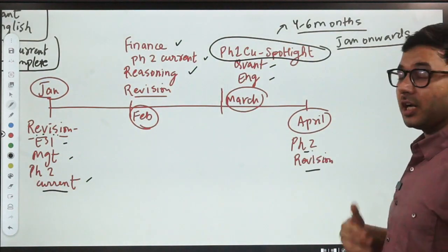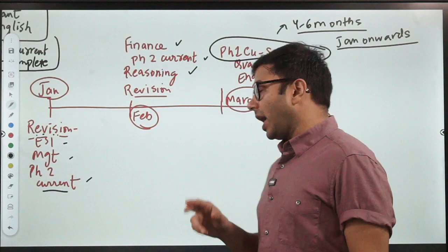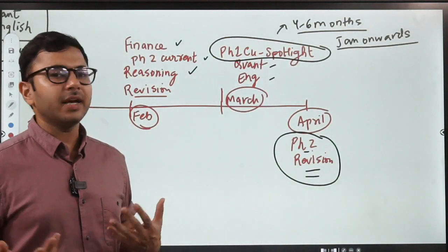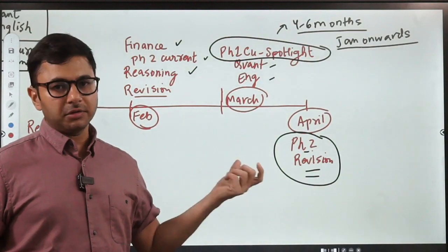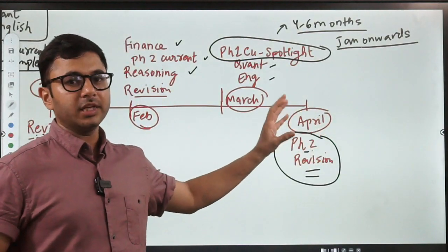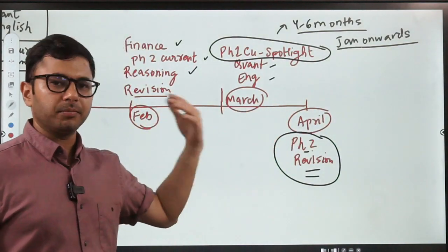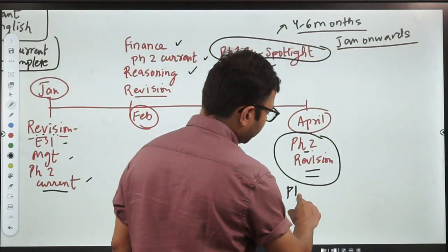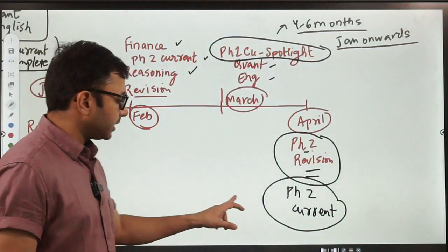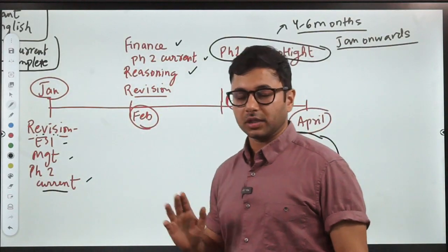In April you start with phase 2 revision again. You will repeat this cycle - ESI, management, finance. All three you will cover here. Because you are revising for phase 2 only. Why have I written phase 2 revision only? Because depending upon the examination, let's say the exam is announced in May, May end for example. So you have the entire May to cover phase 1 - quant, reasoning, English, plus current affairs. So you can use April for phase 2 revision. And May entire you can keep for phase 1. When I say phase 2 revision, I also mean phase 2 current. Because phase 2 current comes in phase 1. Please don't make this mistake of thinking that you'll do phase 2 current after phase 1. You have to cover it before and you have to cover it multiple times, 3-4 times.